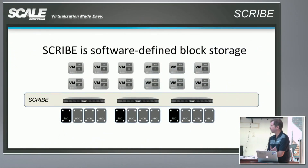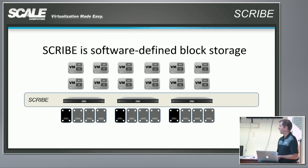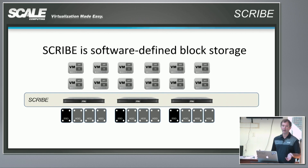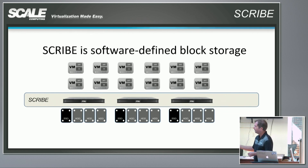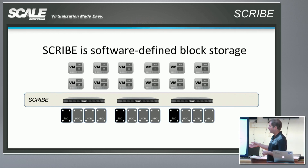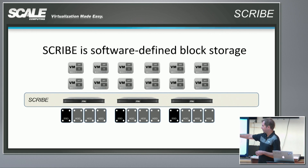Scribe is software-defined block storage. This is a key component of any hyperconverged system — you have to have a way for virtual machines to access the direct-attached block storage available on these machines in a reliable way. The idea with Scribe is you're pooling together all the block devices available in a cluster and making those blocks available to virtual machines. It's really that simple.